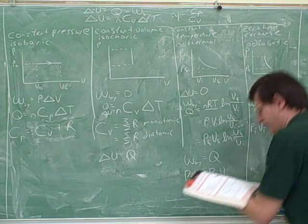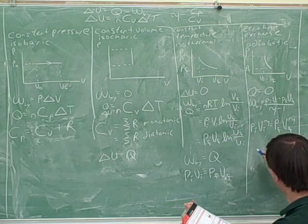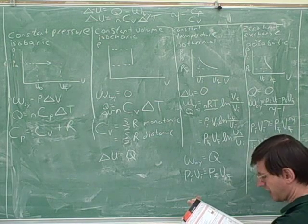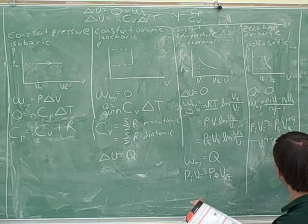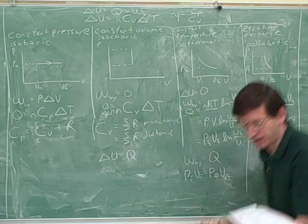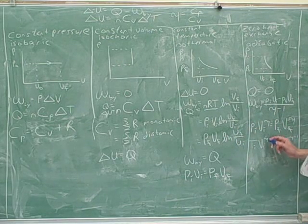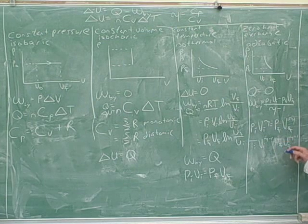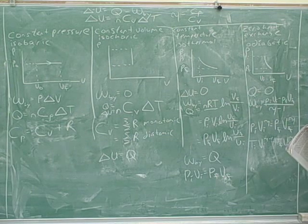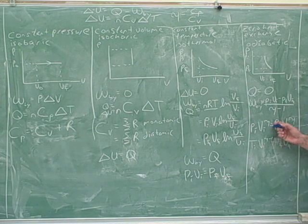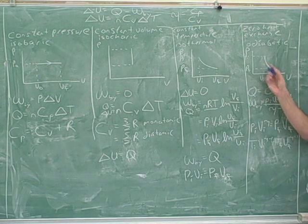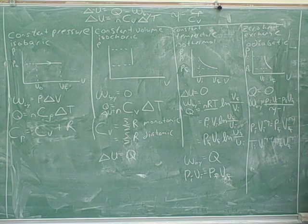There's one more formula in the book that I'll write down for completeness, although it doesn't seem to come up on tests a lot. You could also say T initial times V initial to the gamma minus 1 equals T final V final to the gamma minus 1. I haven't actually seen a test question that involved that, but for completeness we can put that in. But this comes up a lot on exams. Why doesn't this come up as much? Because it involves temperature which is not in the PV graph. Whereas this is used a lot because it has the variables that are in the PV graph.